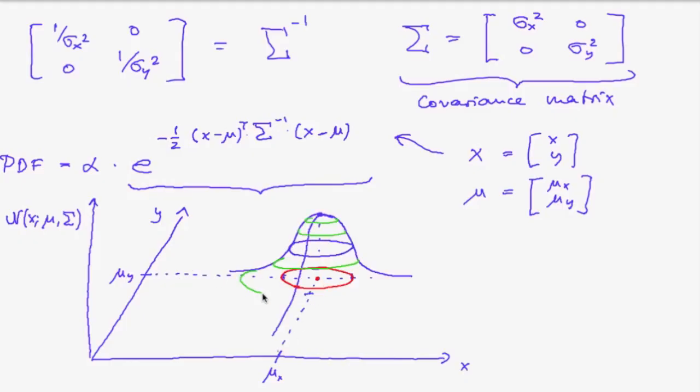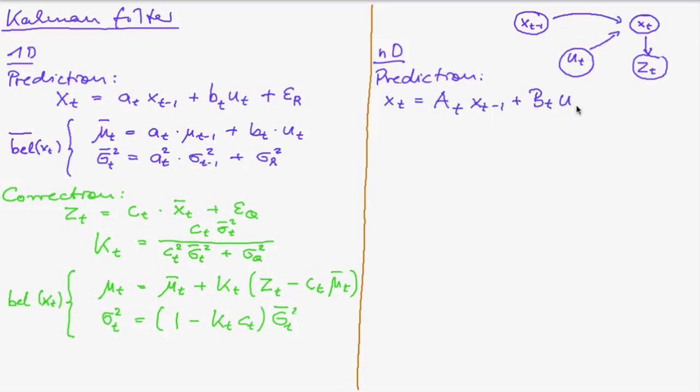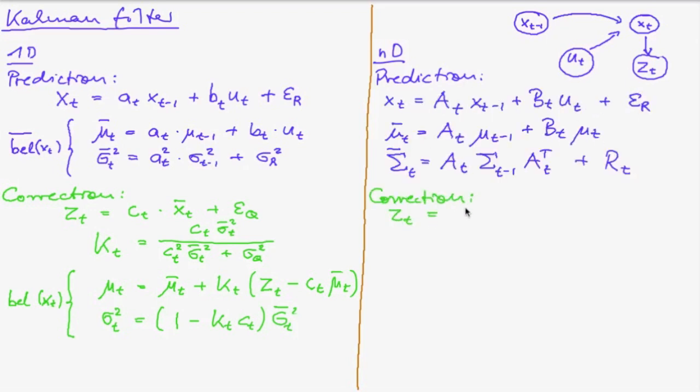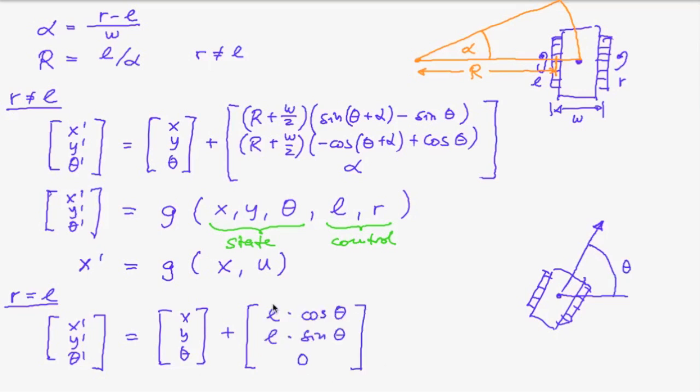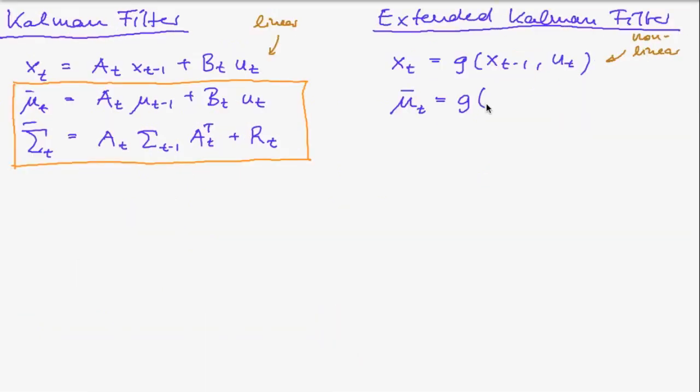In unit D we first look at the multivariate normal distribution and then we find out how the Kalman filter from unit C generalizes to the multidimensional case. We then recapitulate our robot motion equation and, since this is non-linear, we introduce the extended Kalman filter.